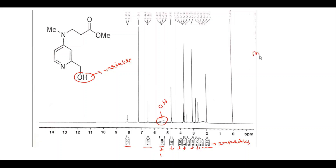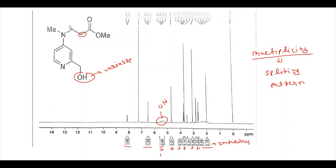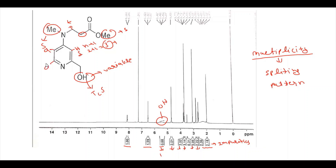Till now we have discussed many things apart from the multiplicity of protons. Multiplicity tells about the splitting pattern of a particular type of proton — singlet, doublet, triplet, quartet. For this CH2 type of proton, since it is connected to 2 hydrogens, multiplicity will be N+1, that is 2+1 = 3, so it will be a triplet. Similarly, these 2 protons will also be a triplet. Since it is not connected to any adjacent active hydrogen, it will be a singlet. The OH can be triplet or singlet depending on purity. The N-methyl proton will be a singlet. This hydrogen will be a singlet. This aromatic proton will be a doublet, and this one also a doublet.